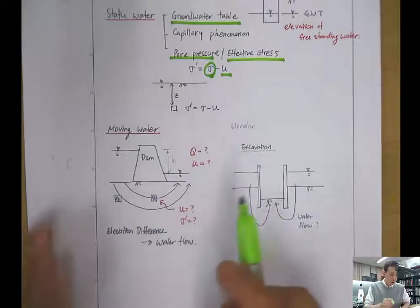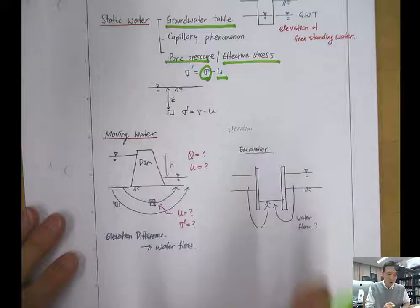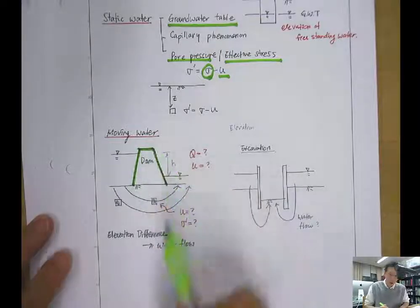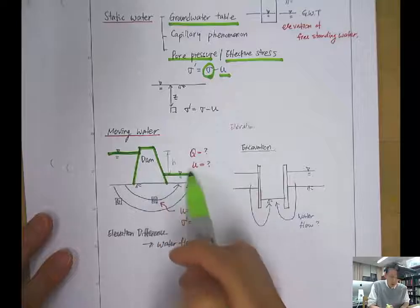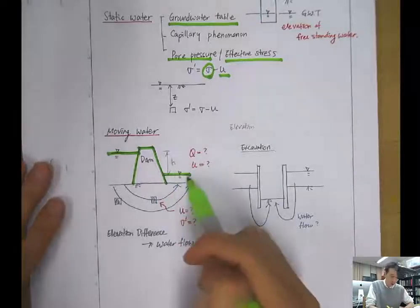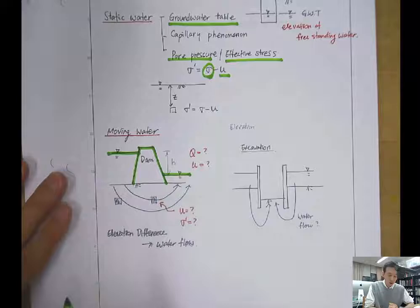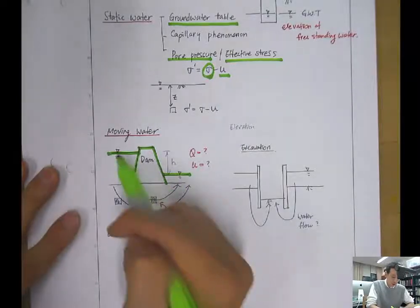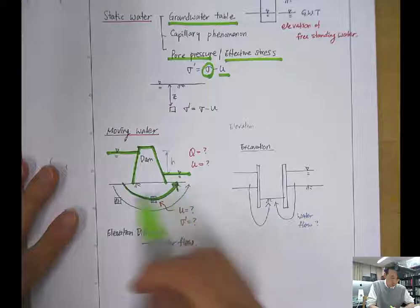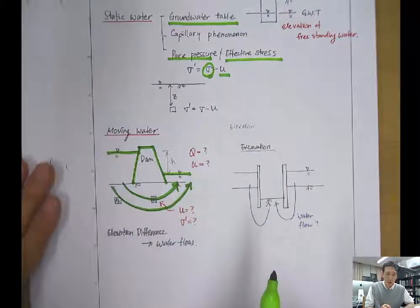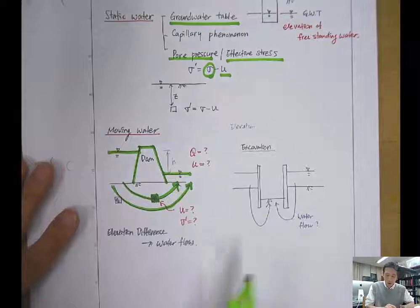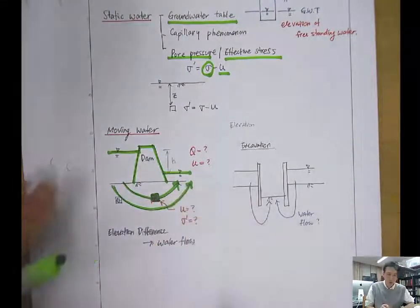Today in this lecture, the water is not static anymore — it will move. For example, here we have a dam that's blocking the water. Here's the upstream and this is the downstream. In the upstream you have a water reservoir with a higher water table, and in the downstream, because it flows down, you have a lower water table. Because of this height difference between upstream and downstream, water will flow through the soil underneath the dam. The question will be: what will be the pore pressure and the effective stress with this moving water?